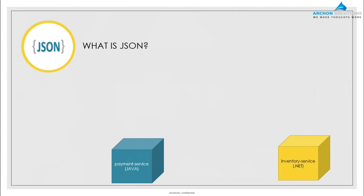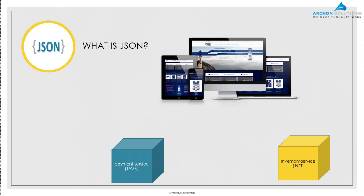There is a web client or a website which needs to talk to both these back-end services for various purposes. It's a website that needs to do payments and also needs to get inventory data, so it depends on both the payment service and the inventory service. How does this website talk to them?